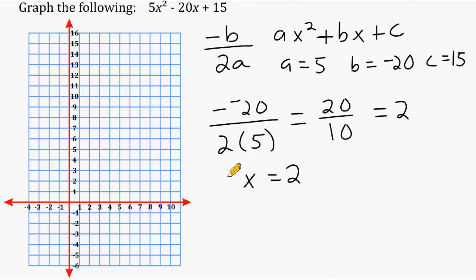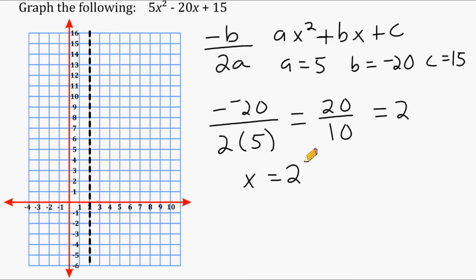We locate 2 on the x-axis and draw a vertical dotted line through it. This dotted line represents the line of symmetry of our equation 5x squared minus 20x plus 15. It's important to remember that this result only tells you where the vertical line passes through the x-axis — it does not give you the vertex yet. It only gives you the x-value of the vertex.